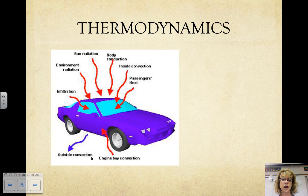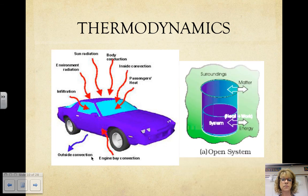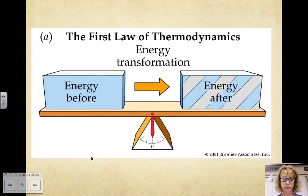Thermodynamics is the study of energy transformations that occur in a collection of matter. We call the collection of matter the system, and the source outside of it is the surroundings. For example, an automobile engine is a system, a cell is a system, the entire planet is a system. The first law of thermodynamics is the law of energy conservation. It states that the total amount of energy in the universe is constant — energy can be transferred and transformed, but it can never be created or destroyed. For example, plants transform the energy from the sun.